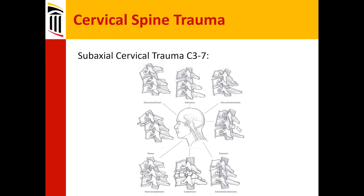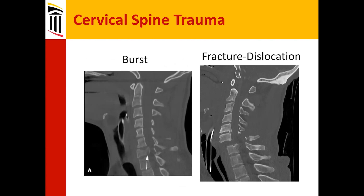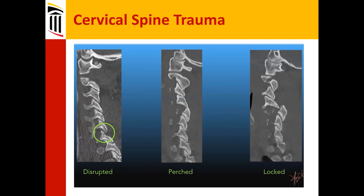There are various types of trauma: traction, distraction, extension compression — we see all of these and their management can be quite different. There is a burst fracture, which is an axial loading type fracture. Fracture-dislocation is potentially the worst, where you have three-column injury and have to put it all back together. There are disrupted facets and a perched facet — it's just about to go over into a locked facet.